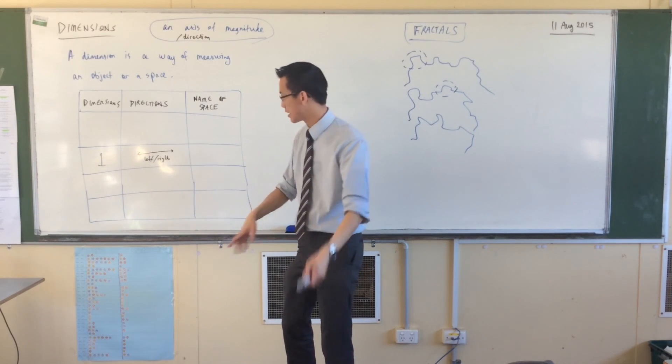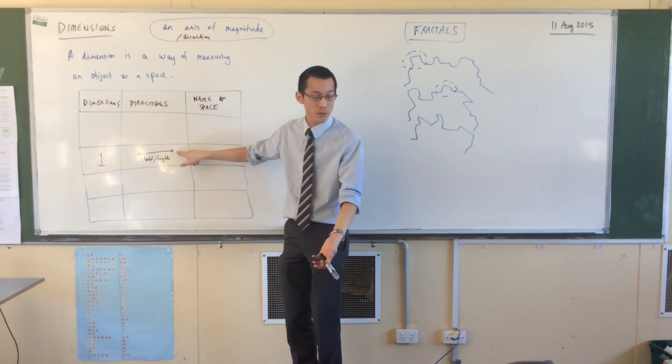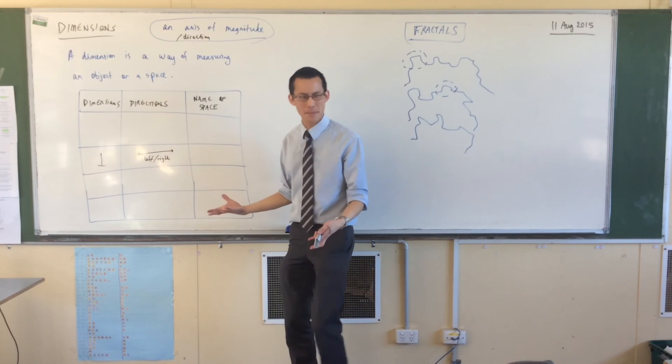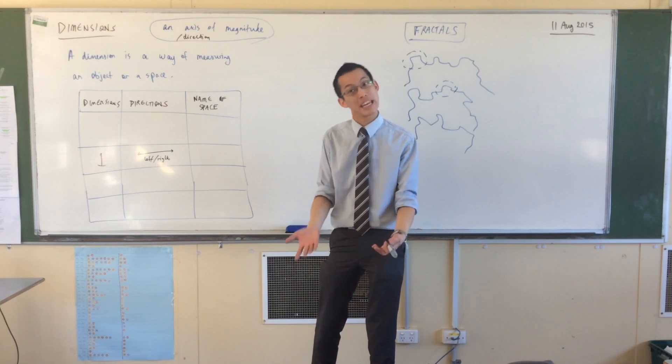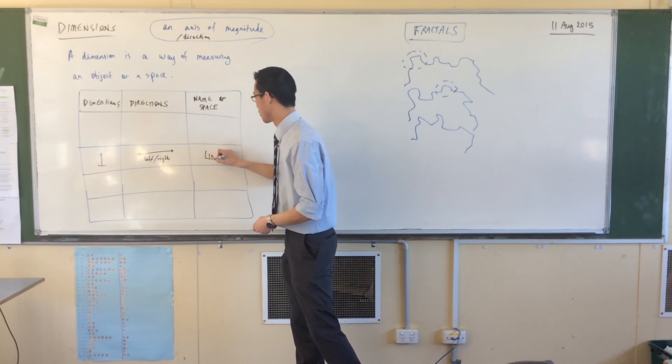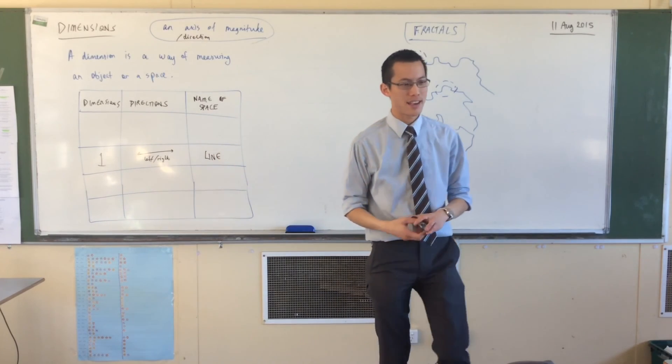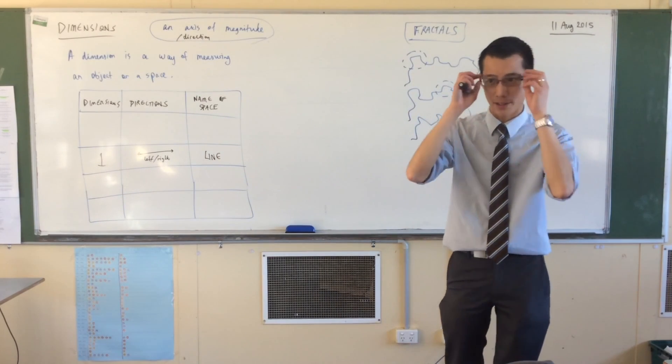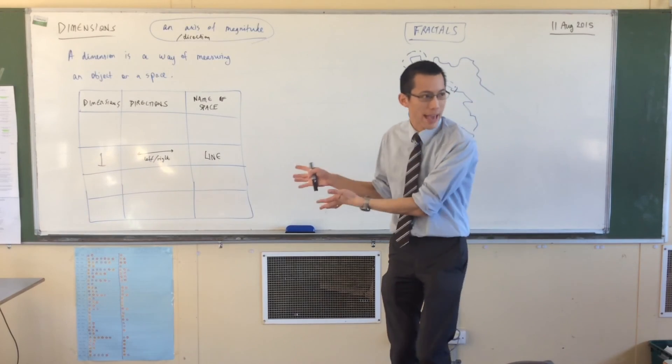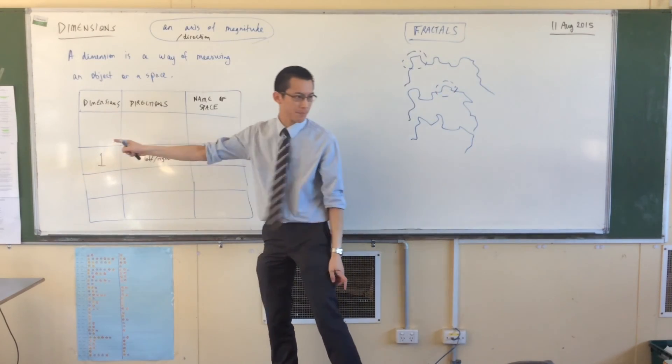Now, we could label it further and give it, say, call it the x-axis for a second. At the moment, that doesn't make all that much sense because I don't have any other axes, so I don't need to name them. I'm just going to call it the line. And we have this when you first learn about integers and stuff. We have the number line. You can go this way, you can go that way.